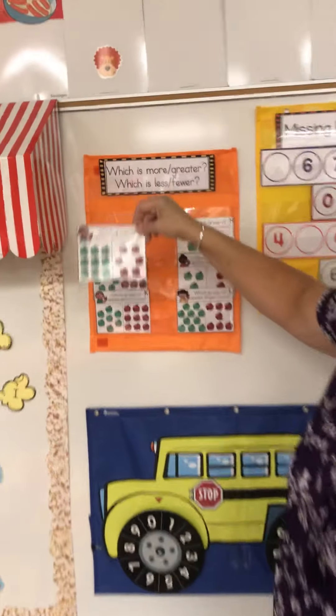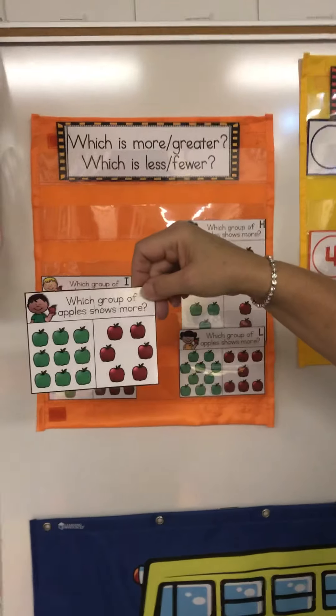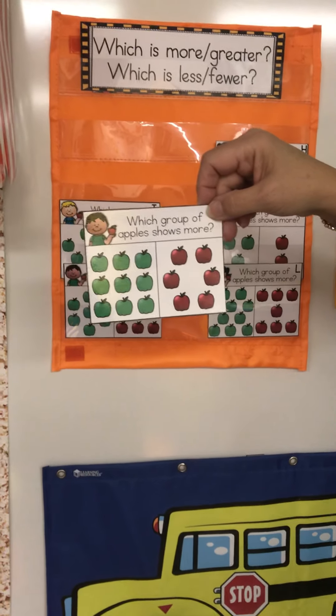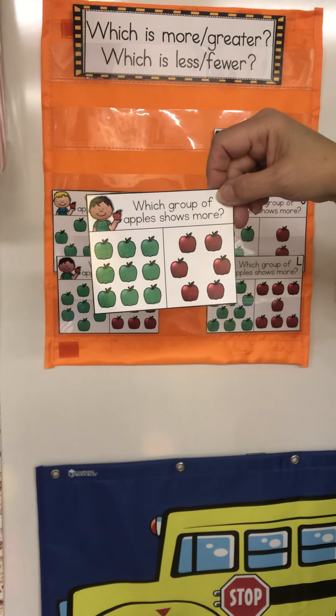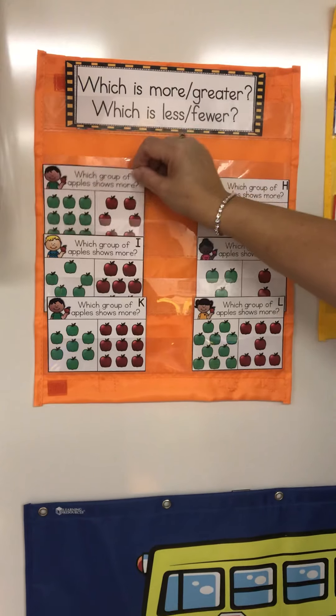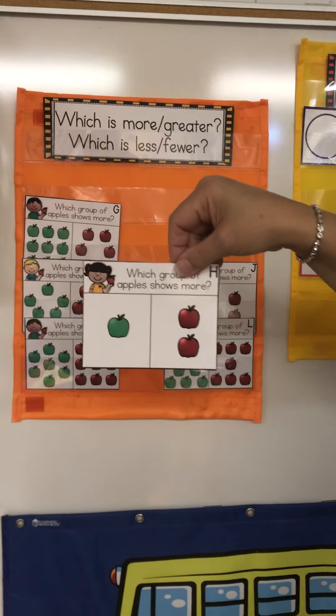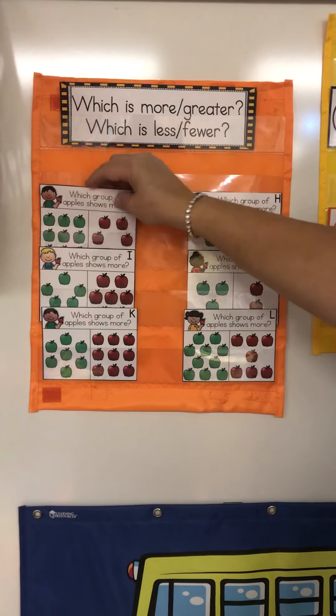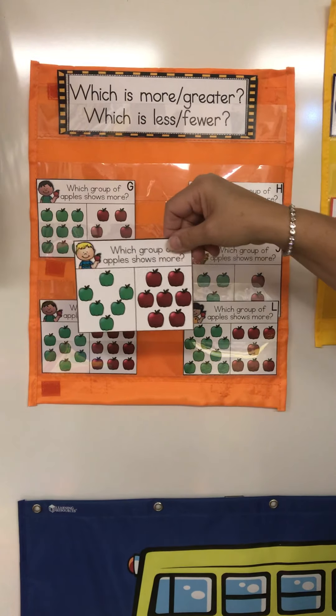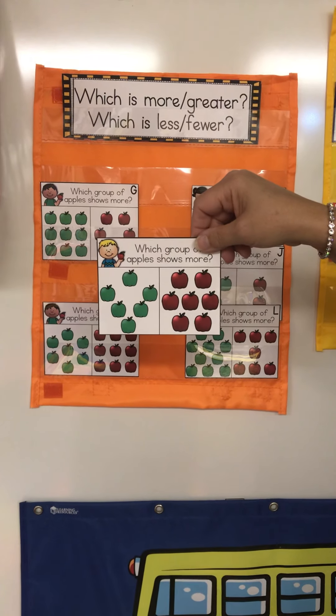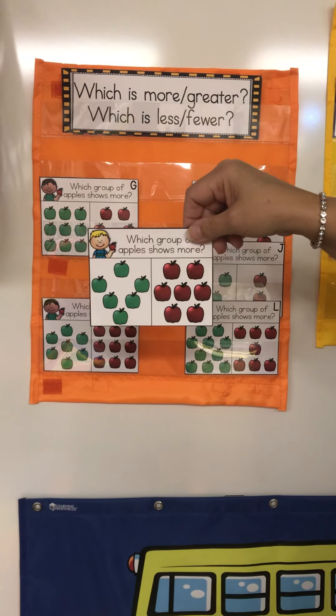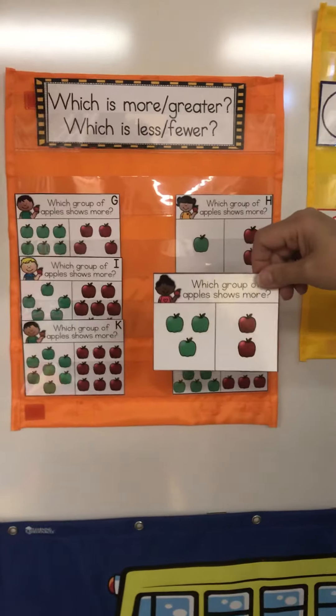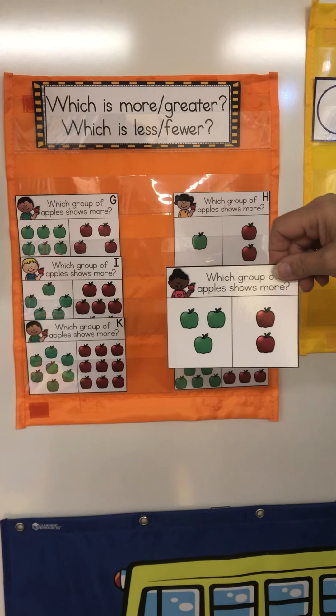Look at our apples. Which group is less? Less means it's a smaller number. Green or red? Which one is less? Red. Which group is less? Green or red? Green. It only has one. Which group is less? Green or red? Green is less. Which group is less? Green or red? Red.